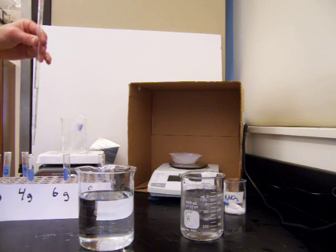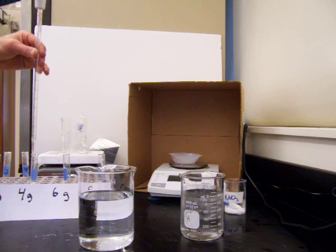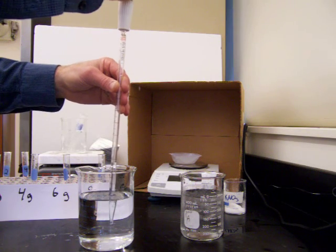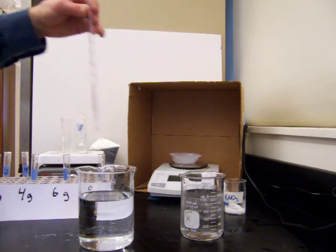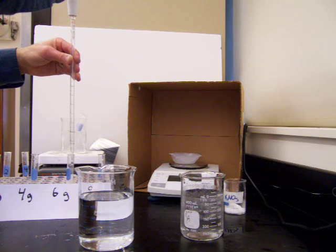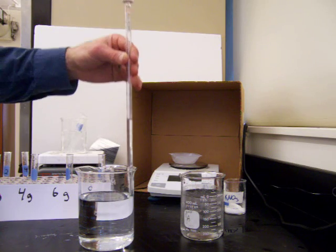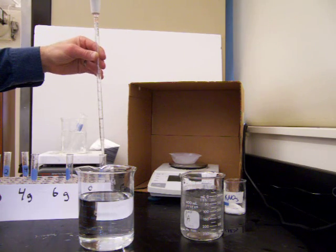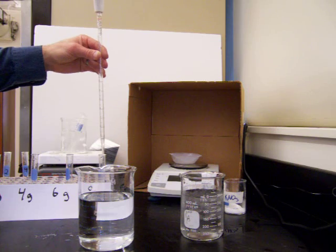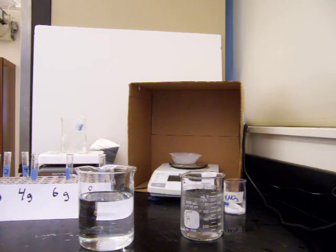We're trying to make solutions here with different concentrations. Concentration is the ratio between solute and solvent. Our solvent here is water, and we're having 5 milliliters of water in each of our solutions. Then we'll vary the amount of the salt, potassium nitrate.